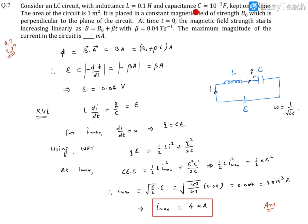There is basically a coil having L and C with area A, and this magnetic field is changing and is perpendicular to the plane. So flux is going to be B·A, which will be (B₀ + βt) × A. A is 1, so we can use this. B₀ is given to us as a constant.